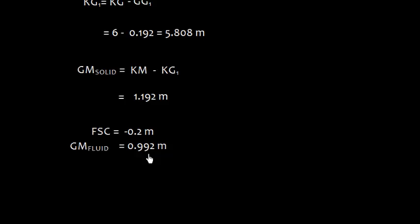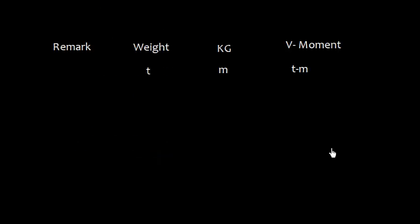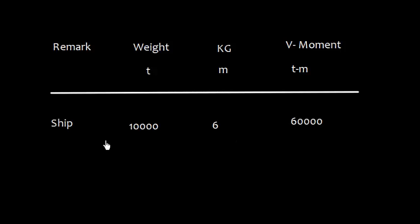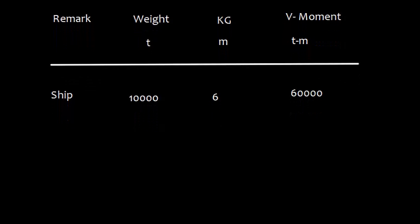We can also solve this problem by this simple moment table. Remark: weight, KG, and vertical moment. Here it is a ship and the weight is 10,000. KG of the ship we have taken as 6 meters, so the vertical moment is 60,000. We have transferred 480 from port side to starboard and the transfer distance is 4 meter vertically downward, which will reduce the vertical moment.